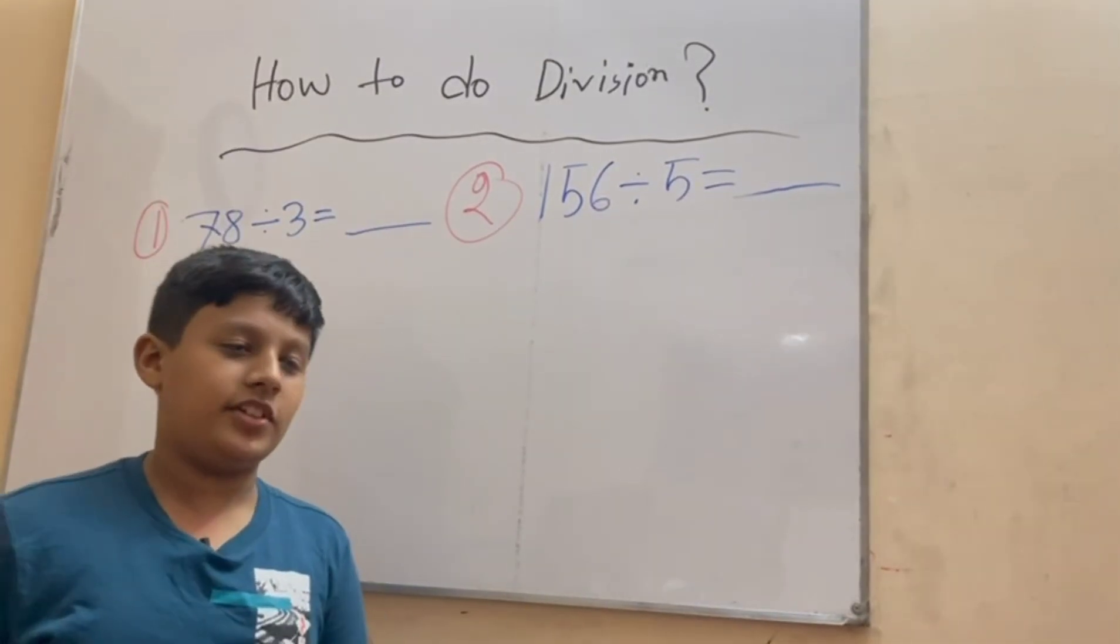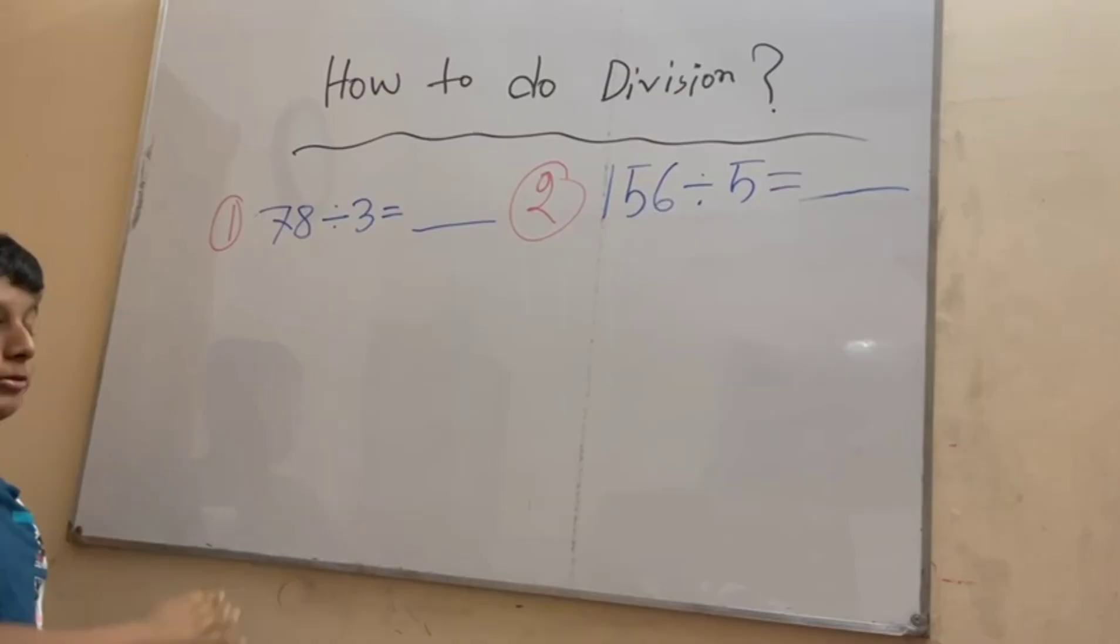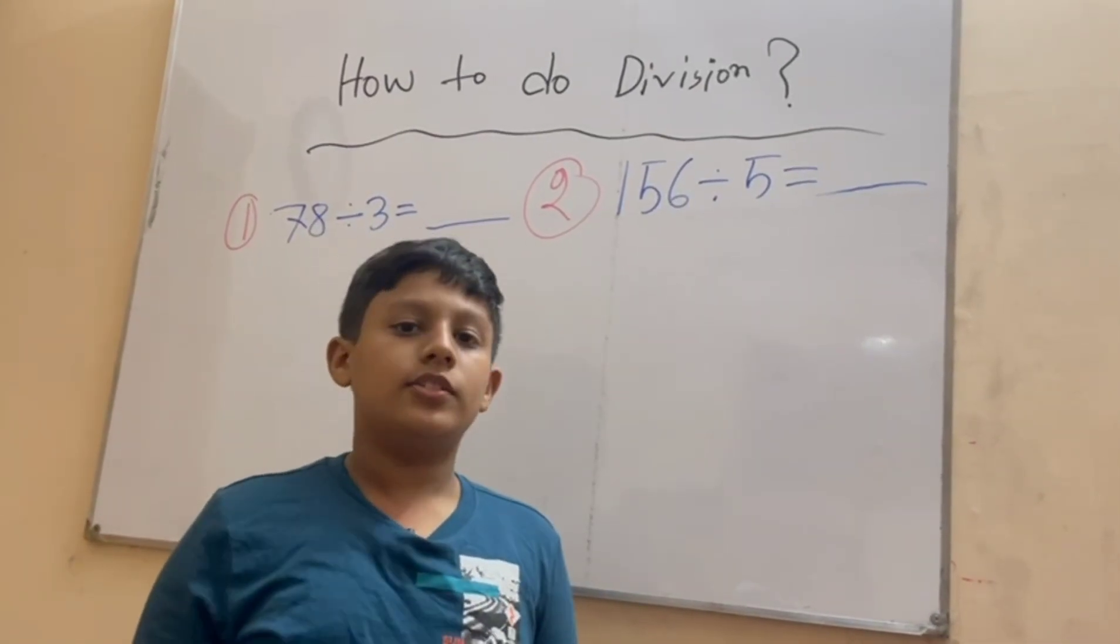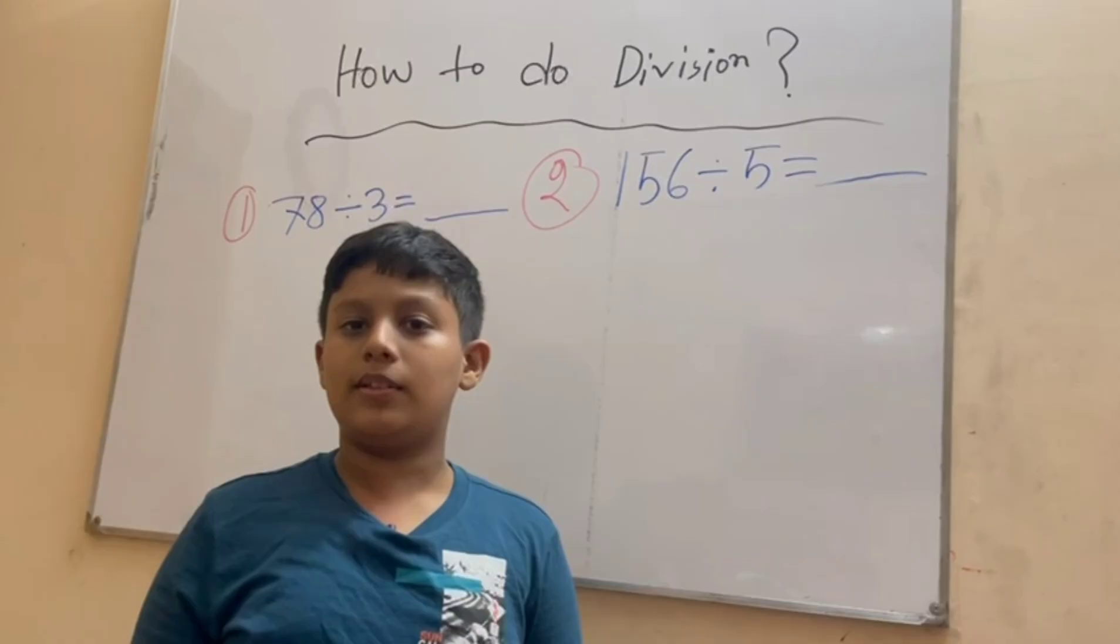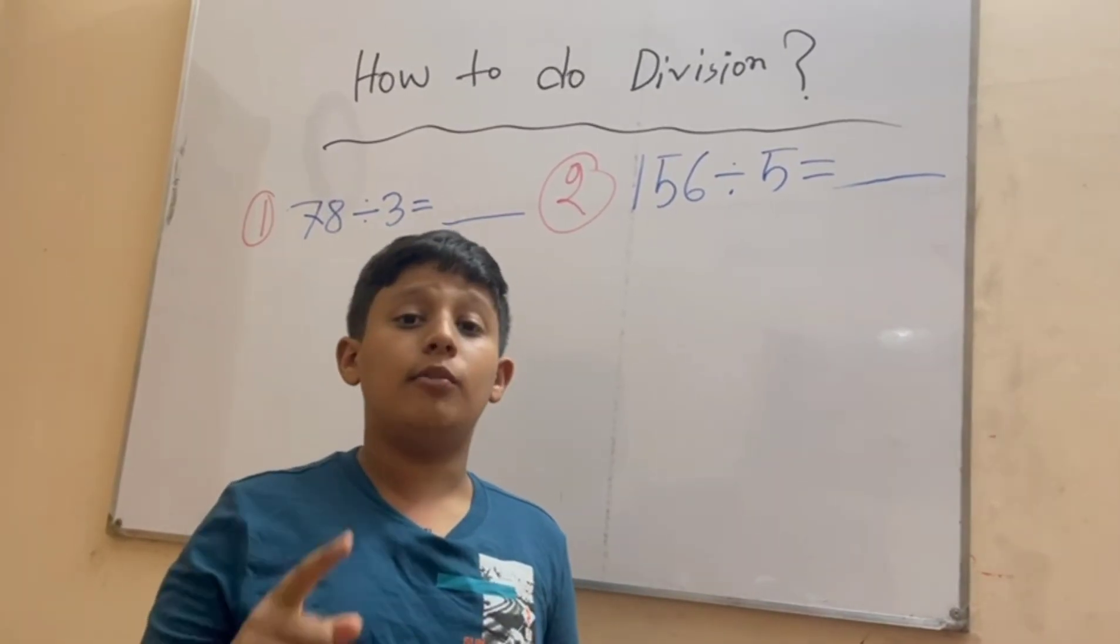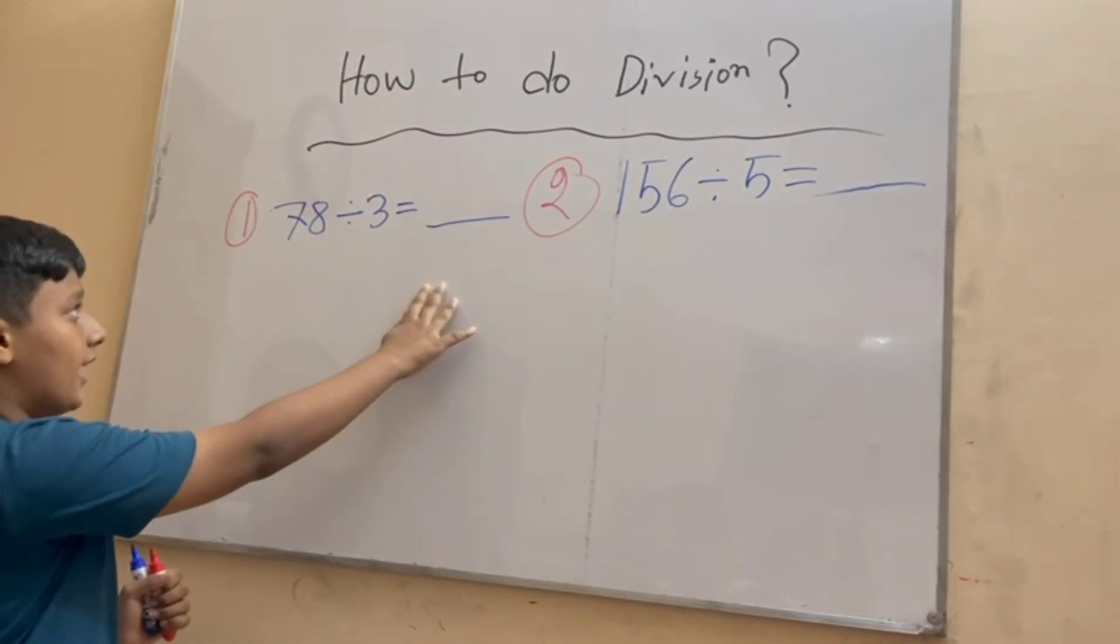Number one: 78 divided by 3. Remember that for every division you need the times table, so you have to memorize the times table from 1 to 15. And in every division you need a working, so we have to do the working for this calculation.